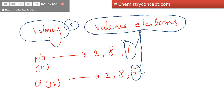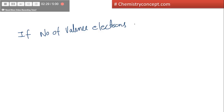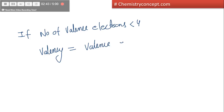Valency is a little bit complex, but here is a formula for how you can find out valency from the valence electrons. If the number of valence electrons is less than 4, then valency would be equal to the valence electrons.